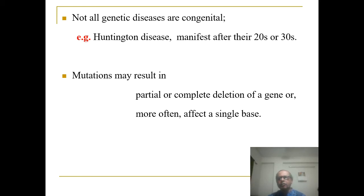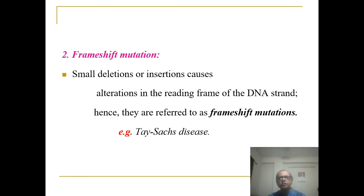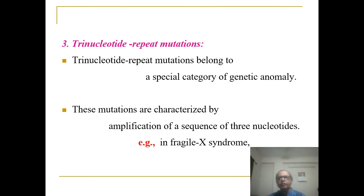Mutation may result in partial or complete deletion of a gene, or more often affect a single base. The types of mutation include: Point mutation, which is usually the replacement of one amino acid by another in the gene product — for example, a single mutation affecting the beta-globin chain of hemoglobin where glutamic acid is changed into valine. Frame-shift mutation: some deletions or insertions cause alteration in the reading frame of the DNA strand, hence they are referred to as frame-shift mutations — example: Tay-Sachs disease. Trinucleotide repeat mutation: these mutations are characterized by amplification of a sequence of 3 nucleotides — example: fragile X syndrome.